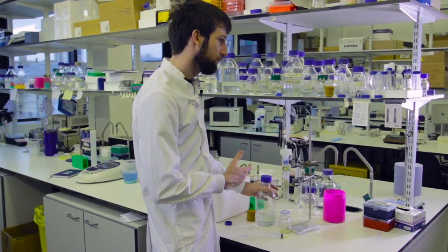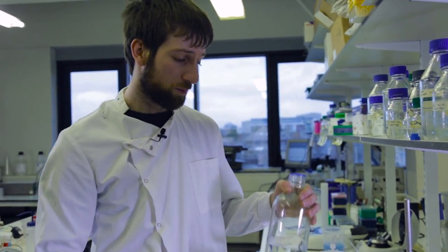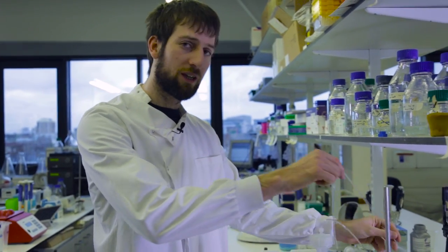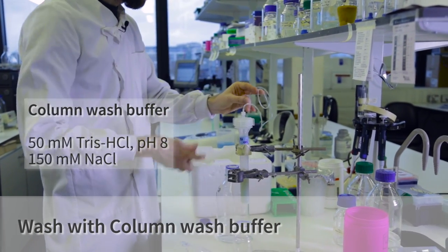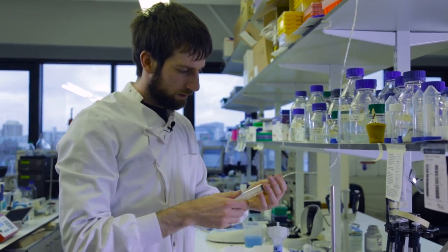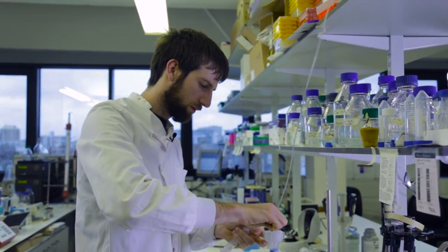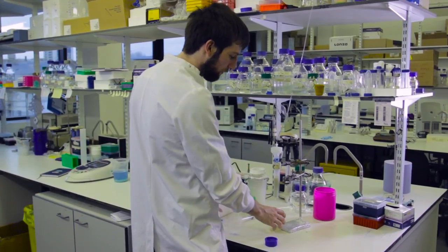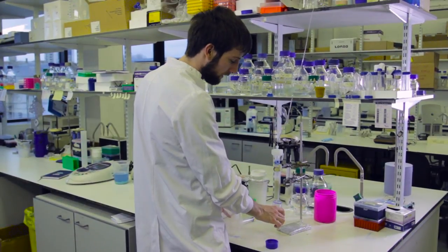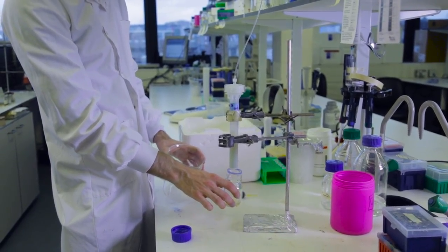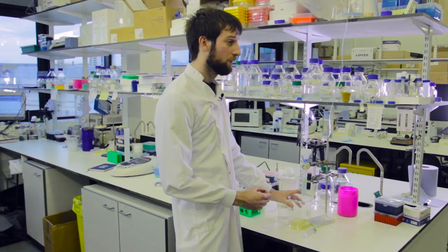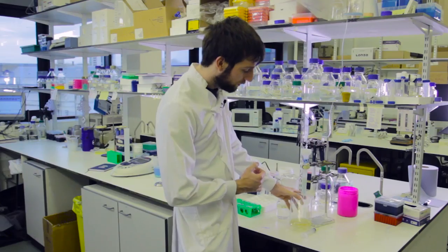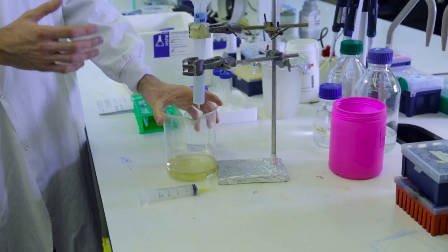We also need to wash off any protein that's just sort of sat on the column rather than specifically bound, and we do that using the column wash buffer, which contains some salts and some buffering agents to keep the proteins in solution. We'll collect a little bit more of the flow-through just to make sure nothing's left behind, and then switch to our wash beaker. The wash buffer has come through. The column is now completely washed, removing any non-specifically bound protein from the column.